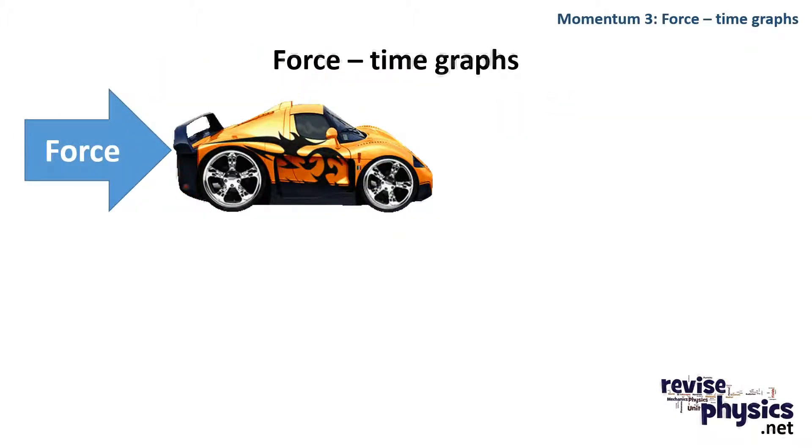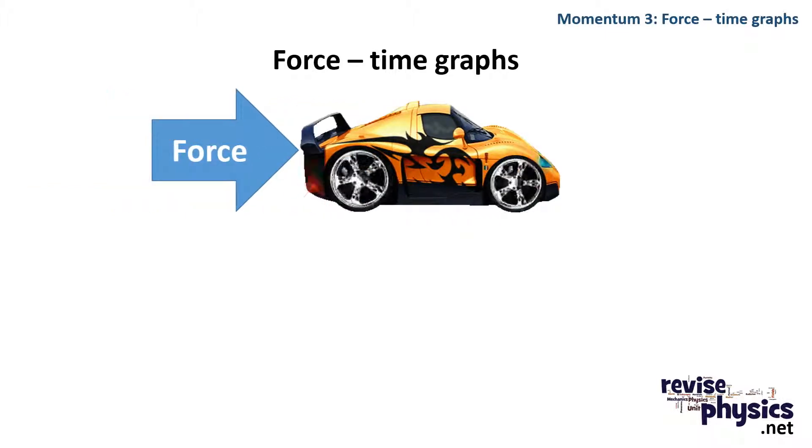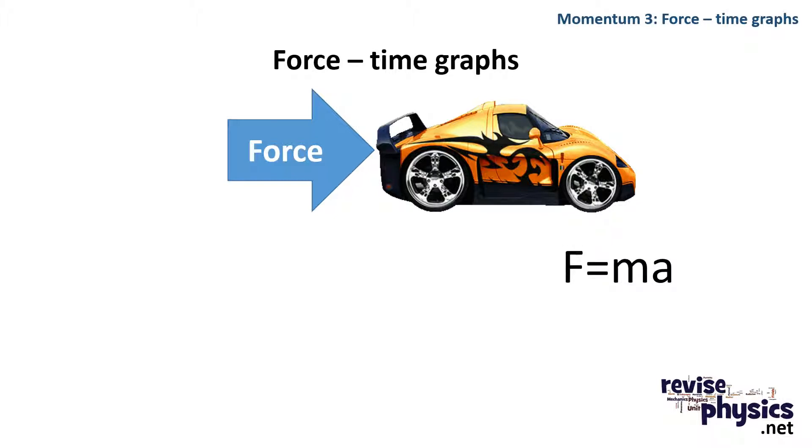If I have a force acting on a vehicle, then according to Newton's Second Law, because that vehicle isn't changing mass, a constant force acting on it will produce an acceleration. And if I have an acceleration, that means I've got a change in velocity. And since momentum is equal to mass times velocity, that means I've got a change in momentum.